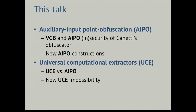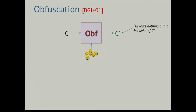I'm going to talk in particular about one result showing that Virtual Gray Box obfuscation and AIPO are somewhat incompatible — only one of them can exist for some specific constructions of obfuscators, in particular Kinetti's construction of a point obfuscator. I'll also briefly discuss potential new assumptions for having such constructions. The second, shorter part of this talk is about UCEs, or Universal Computational Extractors — a security notion for hash functions.